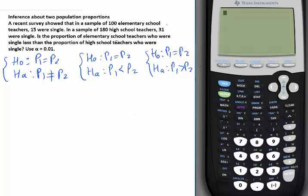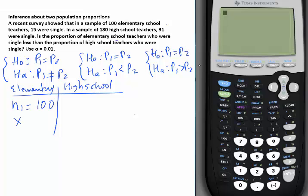So let's read the question and let's do it on the calculator. I'm not asking you to do any work by hand here at all. A recent survey showed that in a sample of 100 elementary school teachers, 15 were single. So it's elementary school teachers versus high school teachers. So N1, sample size is 100, and X1, I'm using X1 and X2 because I have two different proportions. It's 15, 15 were single.